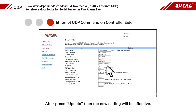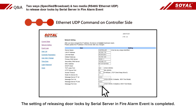After pressing Update, the new setting will be effective. The setting of release door lock by serial server in fire alarm event is complete.